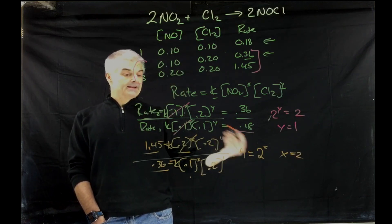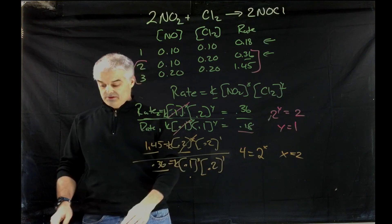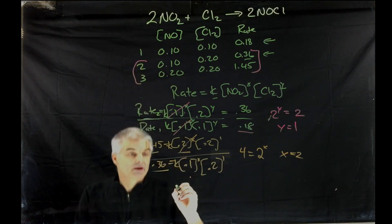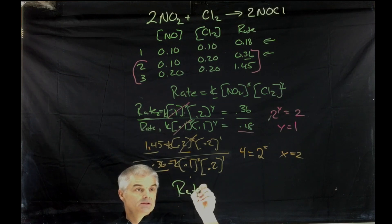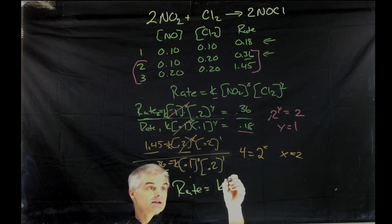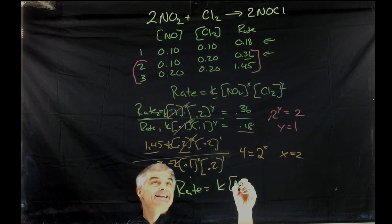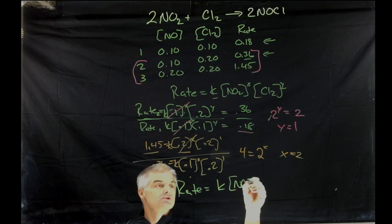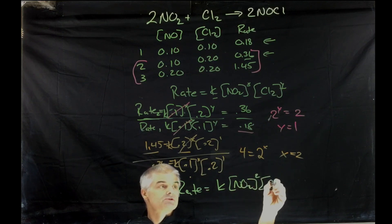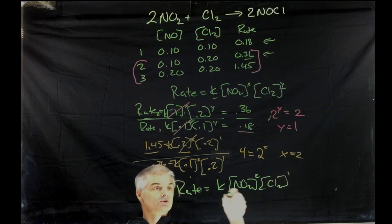Simple? Now, of course, to write out the rate expression, you would simply write this. You would write rate is equal to k times the concentration of the NO2 squared times the chlorine to the first power.